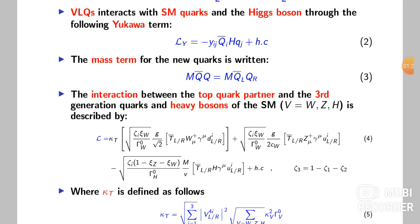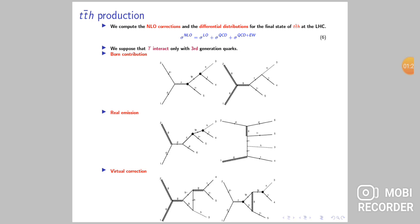We consider the production of TT bar H at the LHC at next-to-leading order. We calculate the total cross-section and the differential distributions.